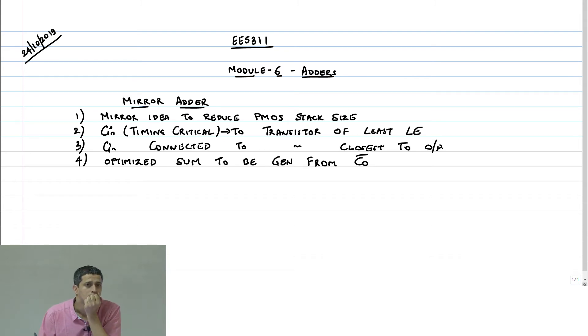And then we optimized sum circuit to be generated from C_out or C_out_bar. Otherwise, the 3-input XOR implementation is going to be very very complex. Instead of that, we were able to reuse the C_out_bar. And why was that okay? Because we showed that in the ripple adder, the C_out is the signal that is on the critical path. Only for the last adder, the sum is on the critical path.